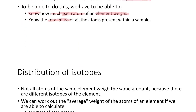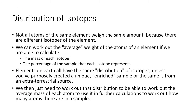However, it gets more tough, because isotopes have different masses, even though they are of the same element. Not all atoms of the same element weigh the same amount, because they have different isotopes with different numbers of protons and neutrons. So we need to work out the average weight of the atoms of an element. To do that, we need to know the mass of each isotope and the percentage of the sample each isotope represents.